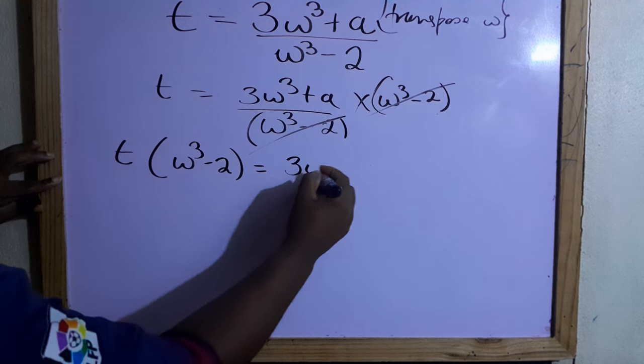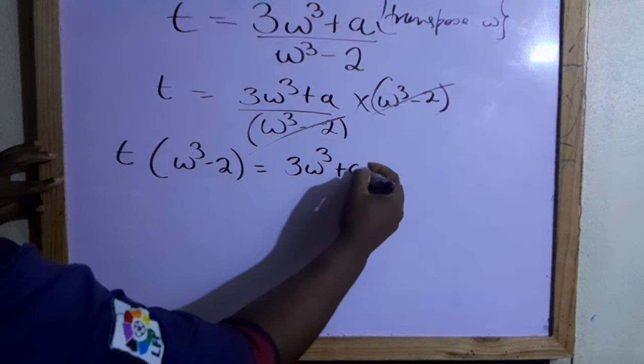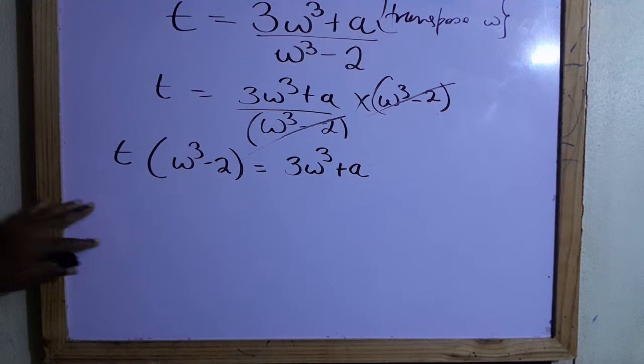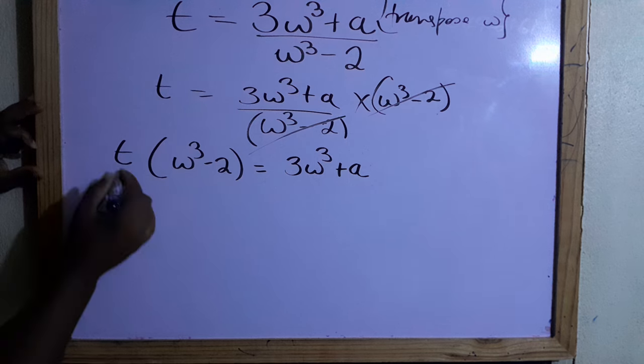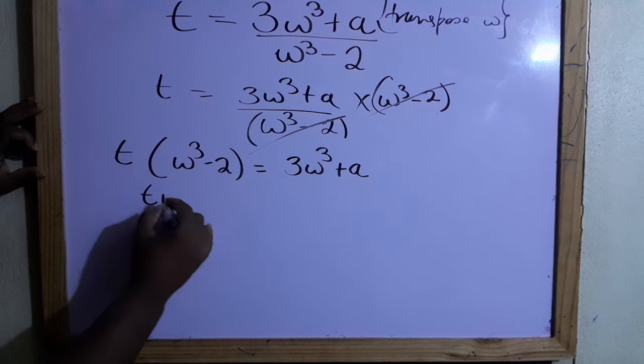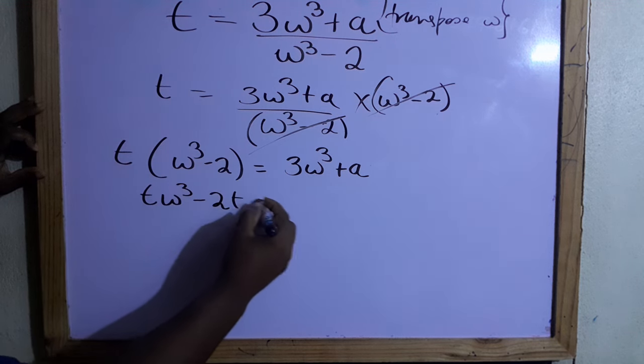Then we'll have 3ω³ + a. Let's expand the bracket because we want to get rid of the bracket first. ℓ times ω³ - 2, so ℓω³ - 2ℓ.